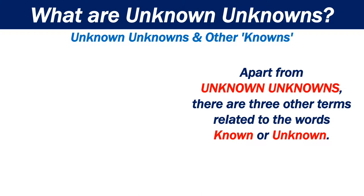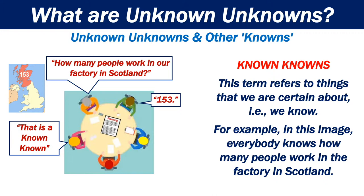Known knowns. This term refers to things that we are certain about, that is, we know about them. For example, in this image on the left, everybody at the table knows how many people work in the factory in Scotland. It is a known known that there are 153 people working in the factory.